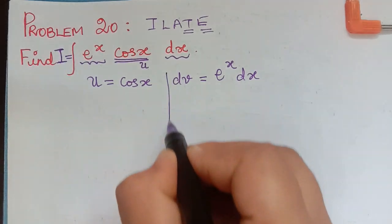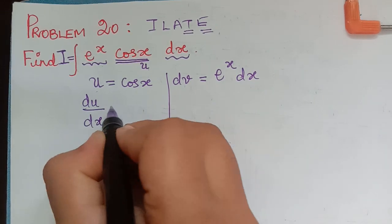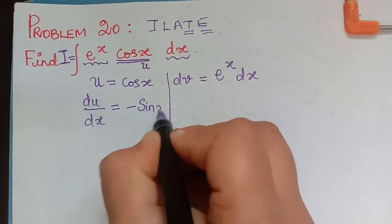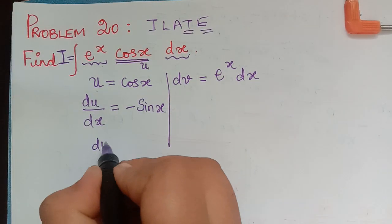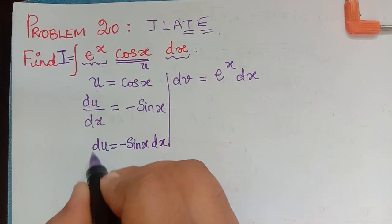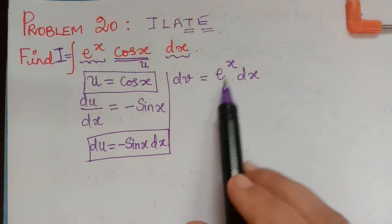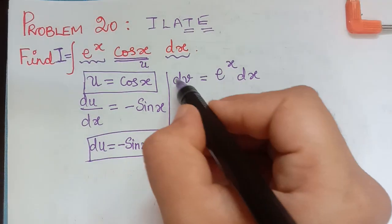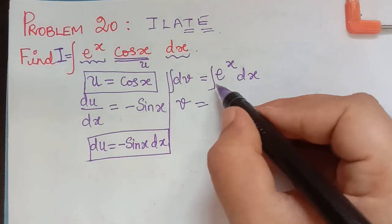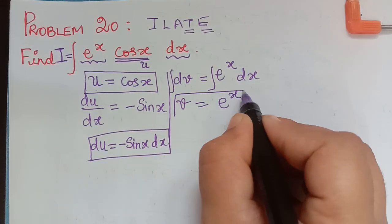Now we differentiate u with respect to x. The differentiation of cos x is negative sin x, so du equals negative sin x dx. For dv equal to e^x dx, we integrate both sides: the integral of dv is v, which equals e^x.